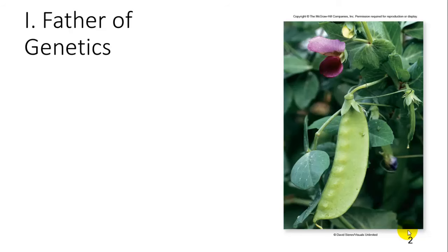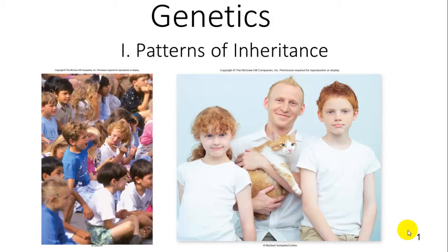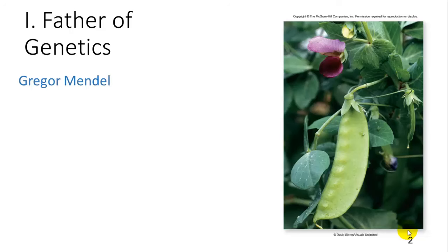We're going to start with what people originally started noticing: that progeny, or especially in humans, children look like their parents, but not exact copies. There was this observation that traits are being passed from parents to offspring, but exactly how was not discovered until the father of genetics, Gregor Mendel, did a bunch of experiments with pea plants.